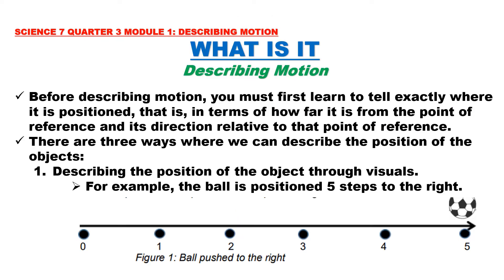What is it? Describing motion. Motion is a change in position with respect to a fixed point. Before describing motion, you must first learn to tell exactly where an object is positioned — in terms of how far it is from the point of reference and its direction relative to that point of reference.